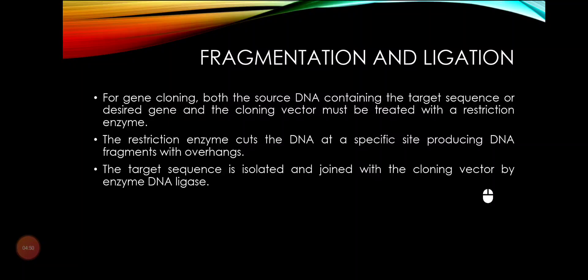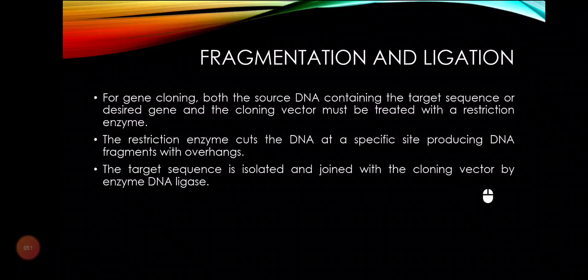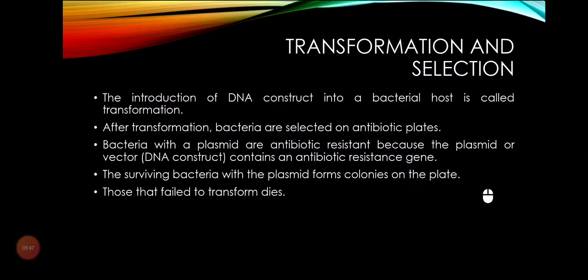For example, the restriction enzyme BamH1 recognizes the sequence GGATCC — wherever that sequence appears in the DNA, it recognizes and cleaves it. After fragmentation, the desired gene is separated and then integrated with the plasmid, which has also been treated with the same restriction enzyme. The integration or ligation of the vector and target gene is carried out by the enzyme DNA ligase. After integration, the vector can be called a recombinant plasmid.